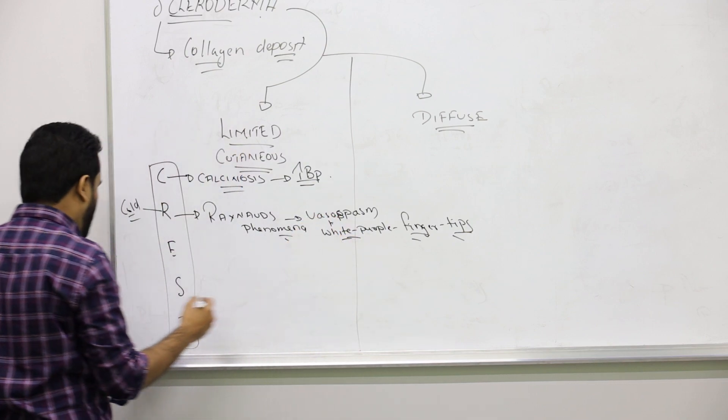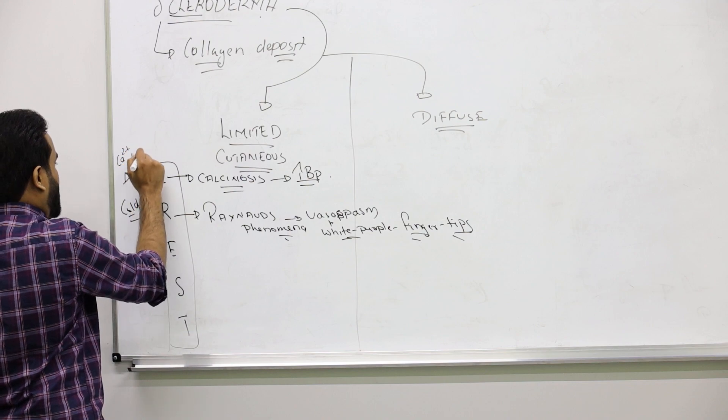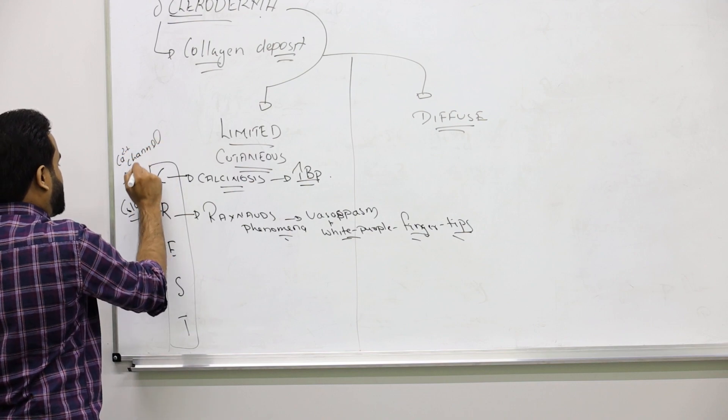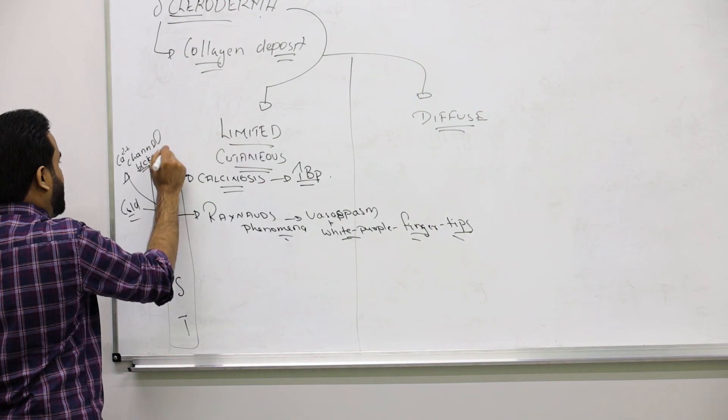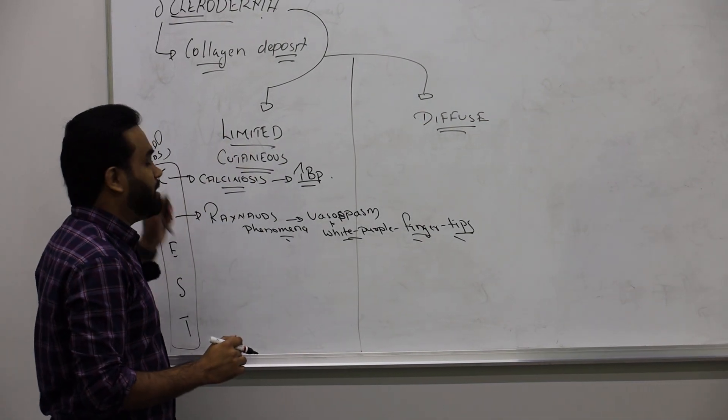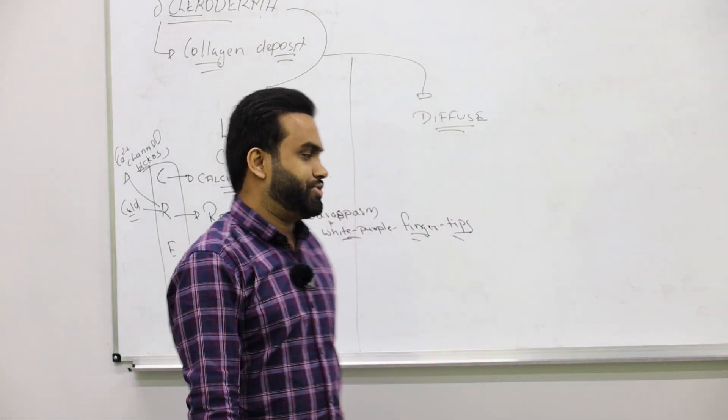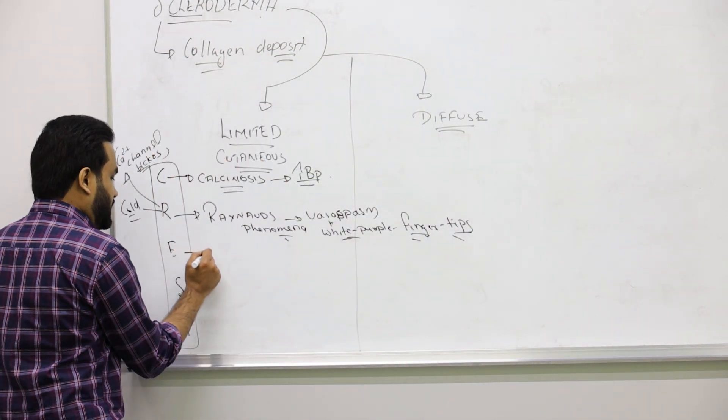That's why we give them calcium channel blockers. If someone has scleroderma with Raynaud's phenomenon, or individually Raynaud's phenomenon, to prevent the vasospasm give them calcium channel blockers.